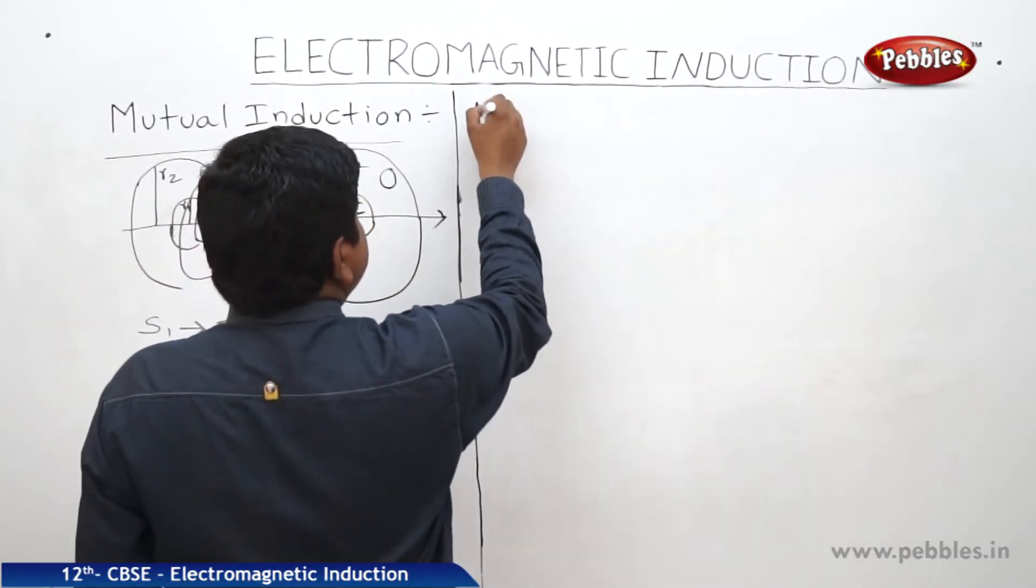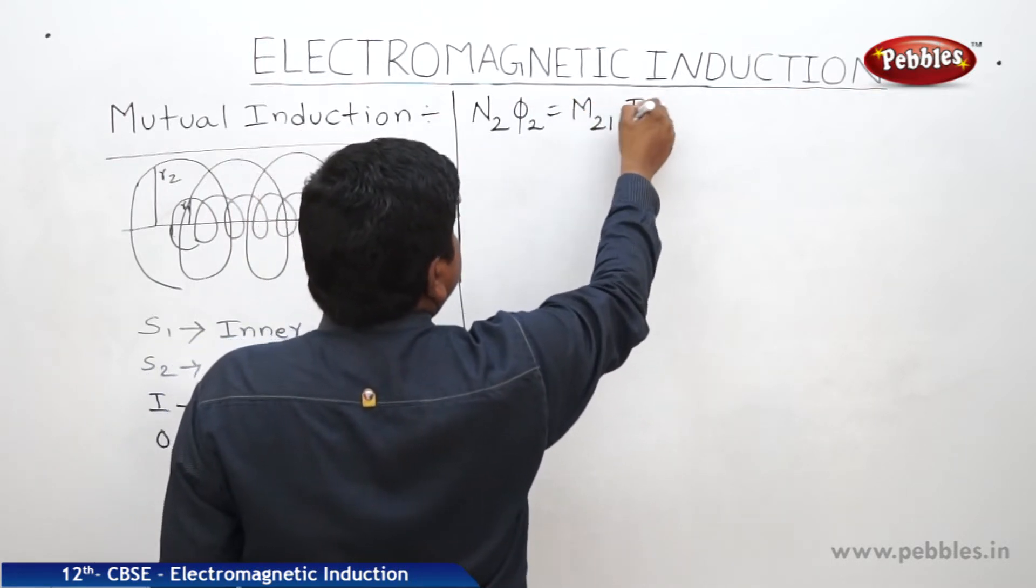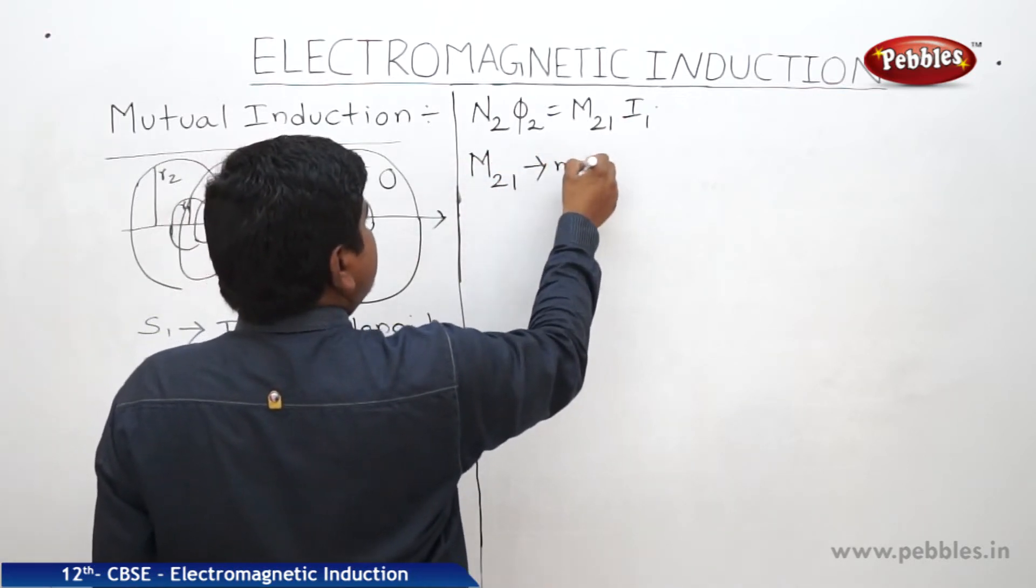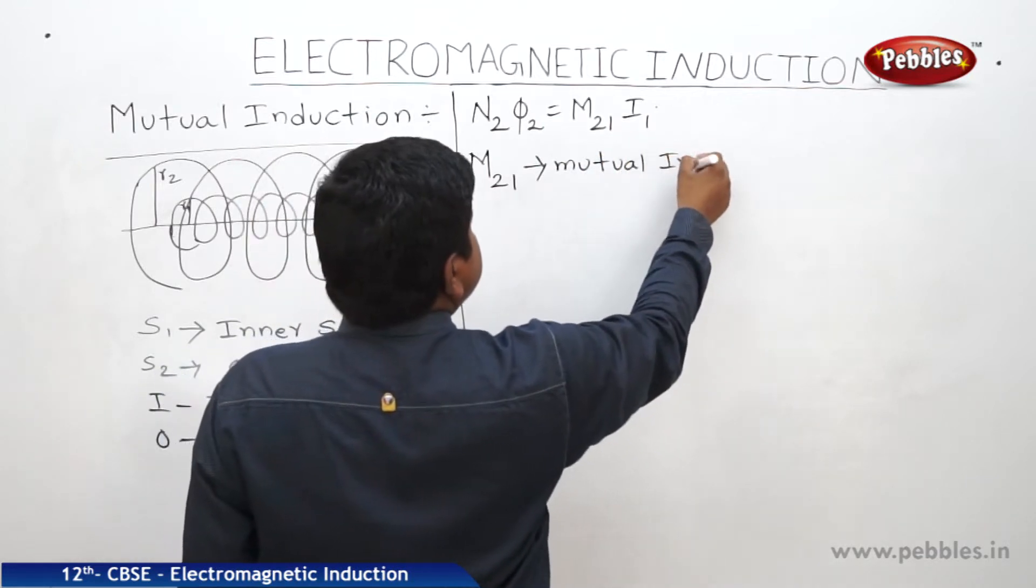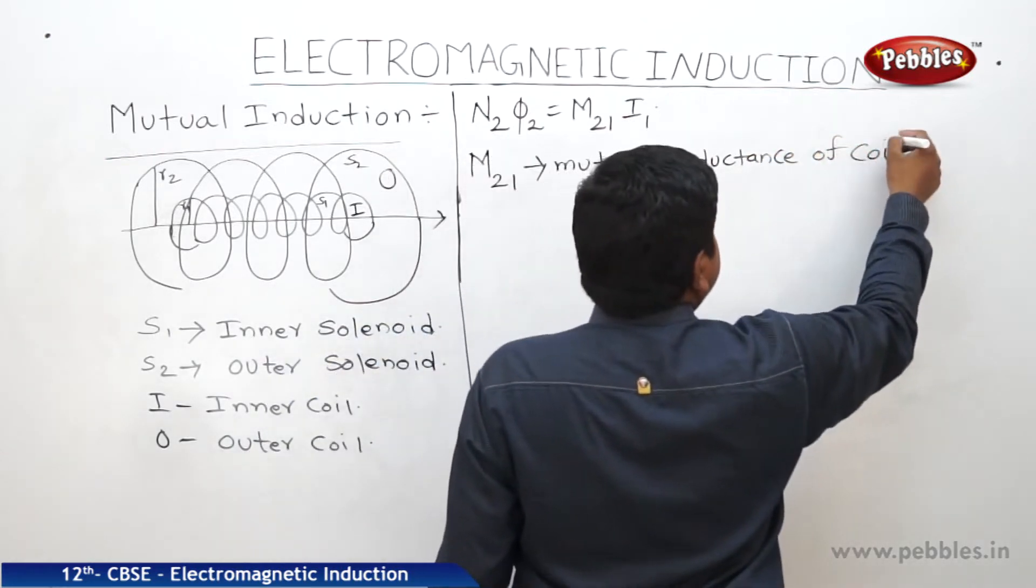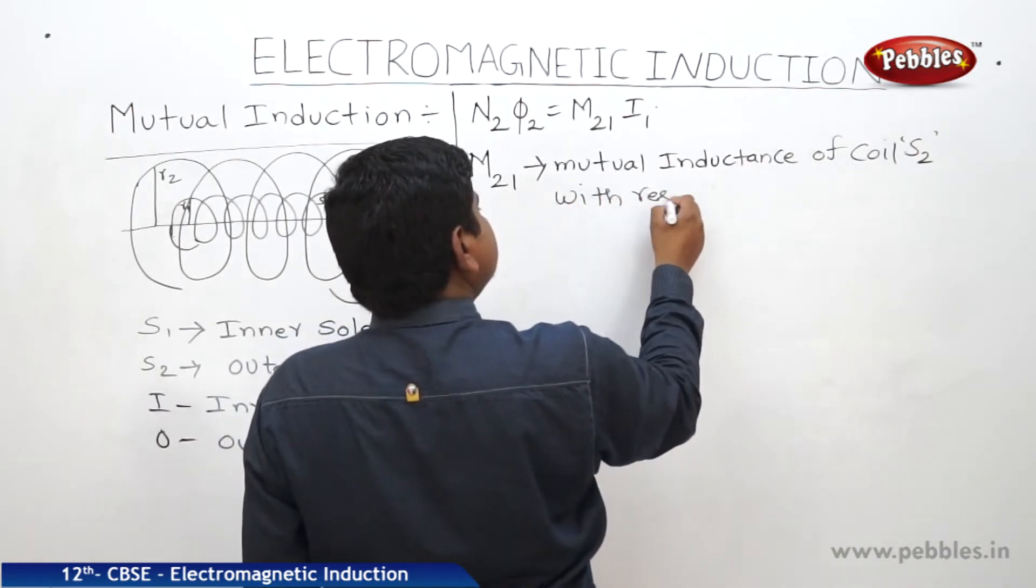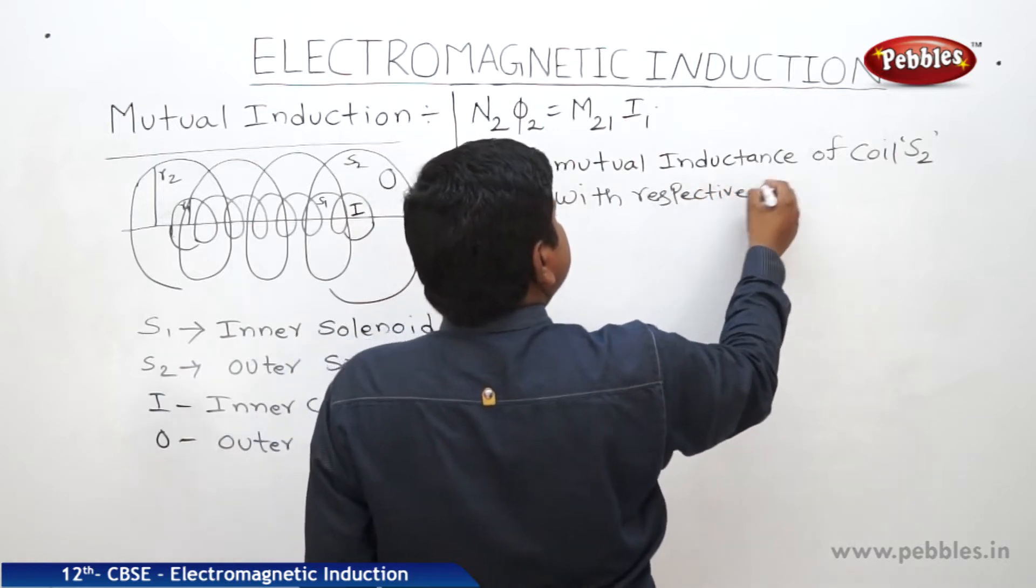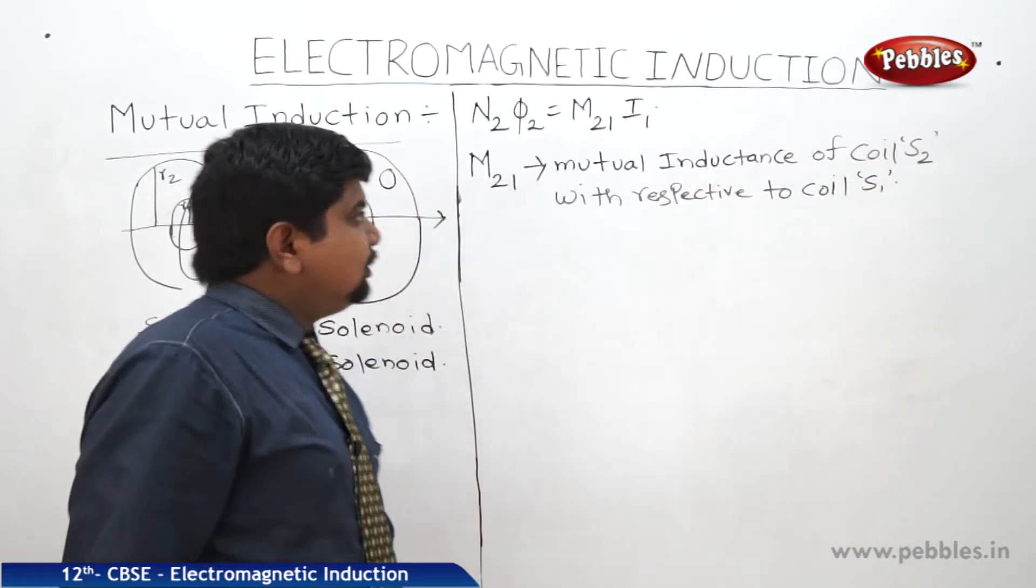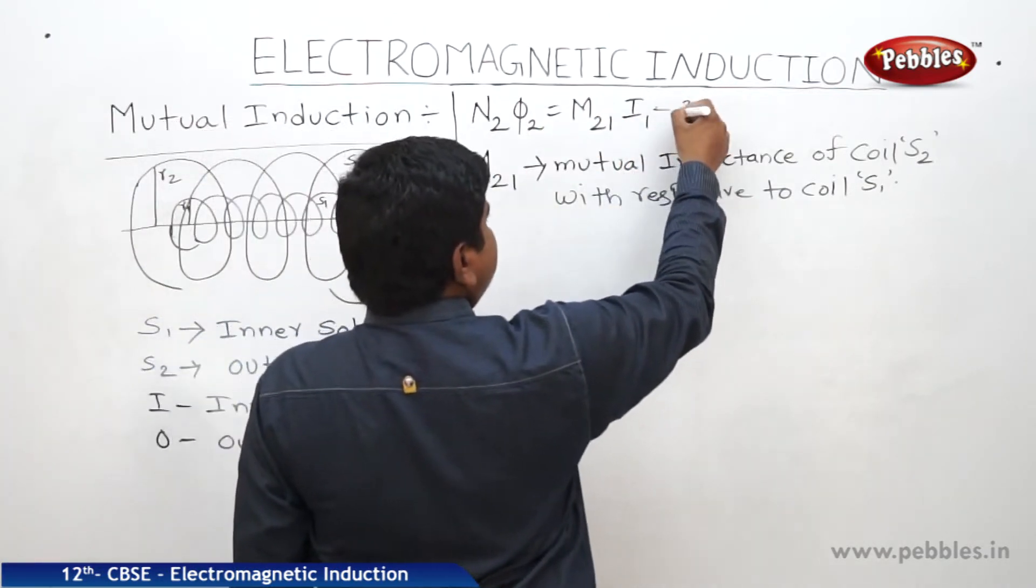Now the vice versa case is like this: N2 phi 2 is equal to M21 I1. So what is this M21? Mutual inductance of coil S2 with respect to S1. Now we are going to write the equations for this N2 phi 2 and equating the M21 I1. Let us say this is equation 3.